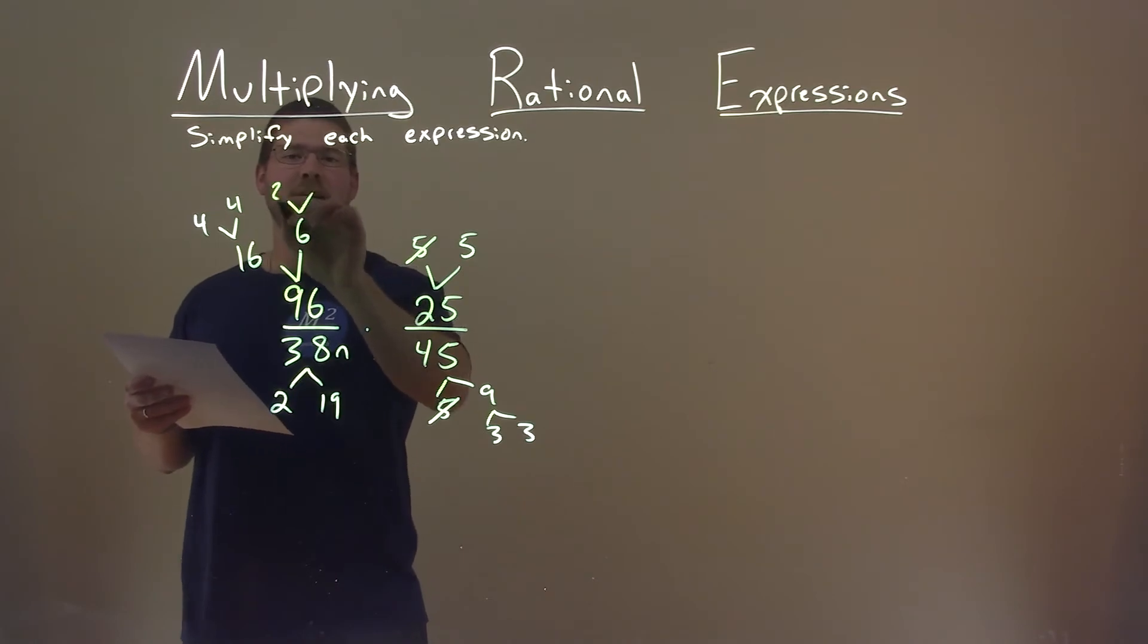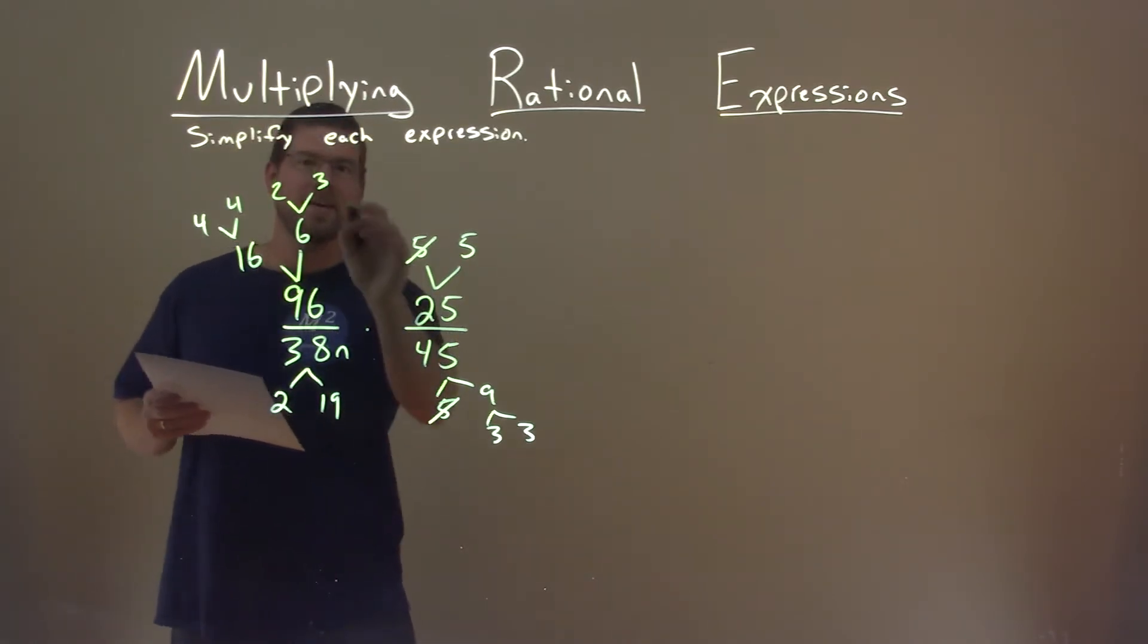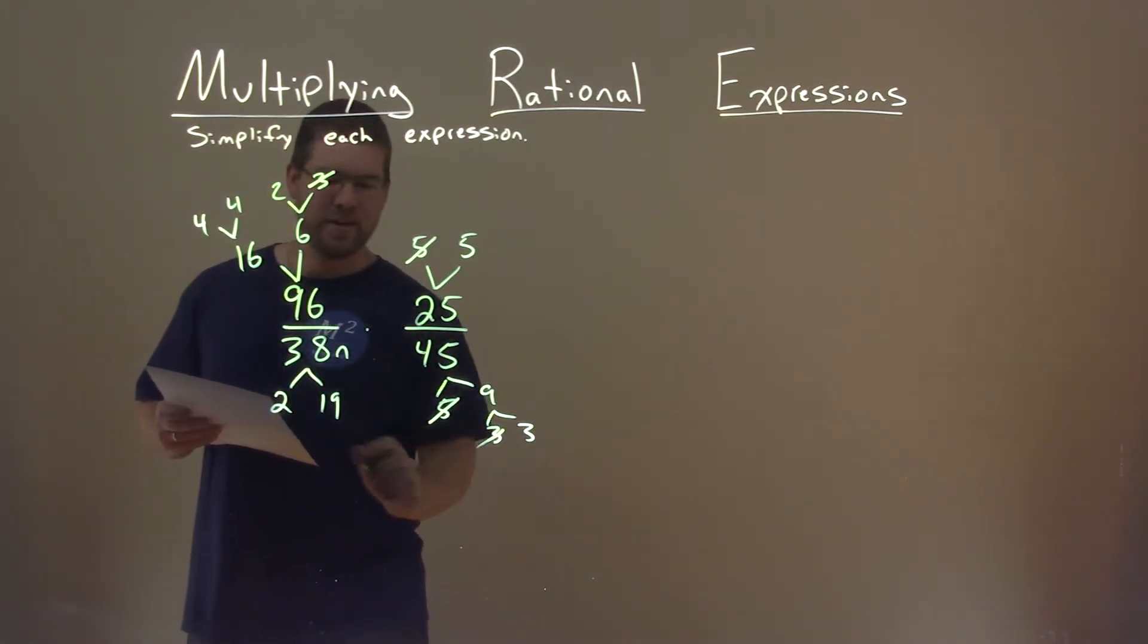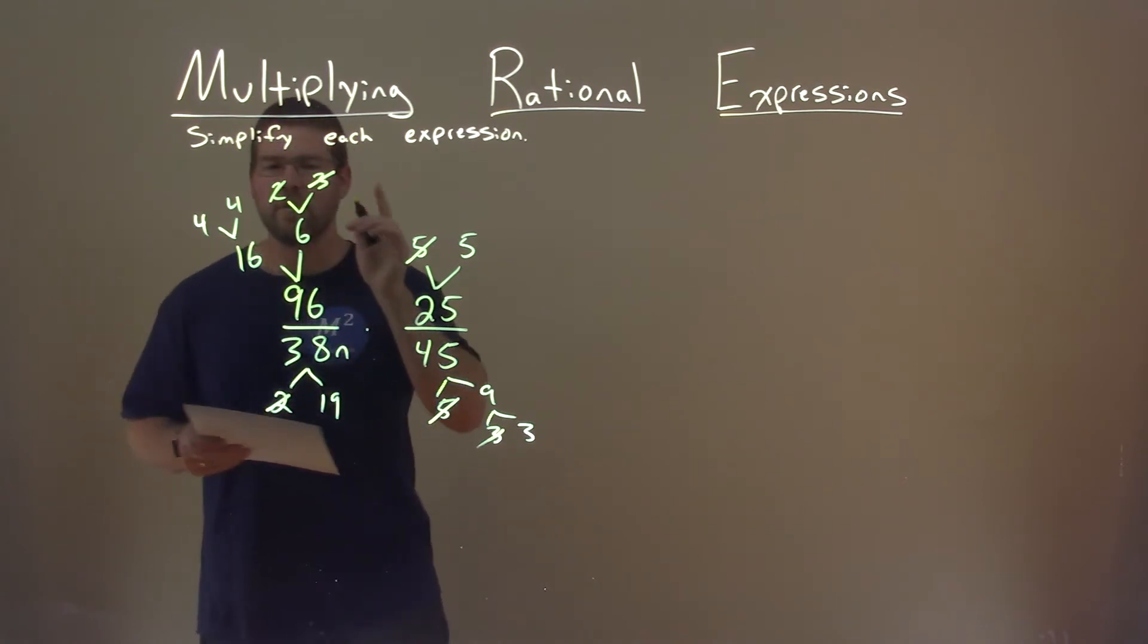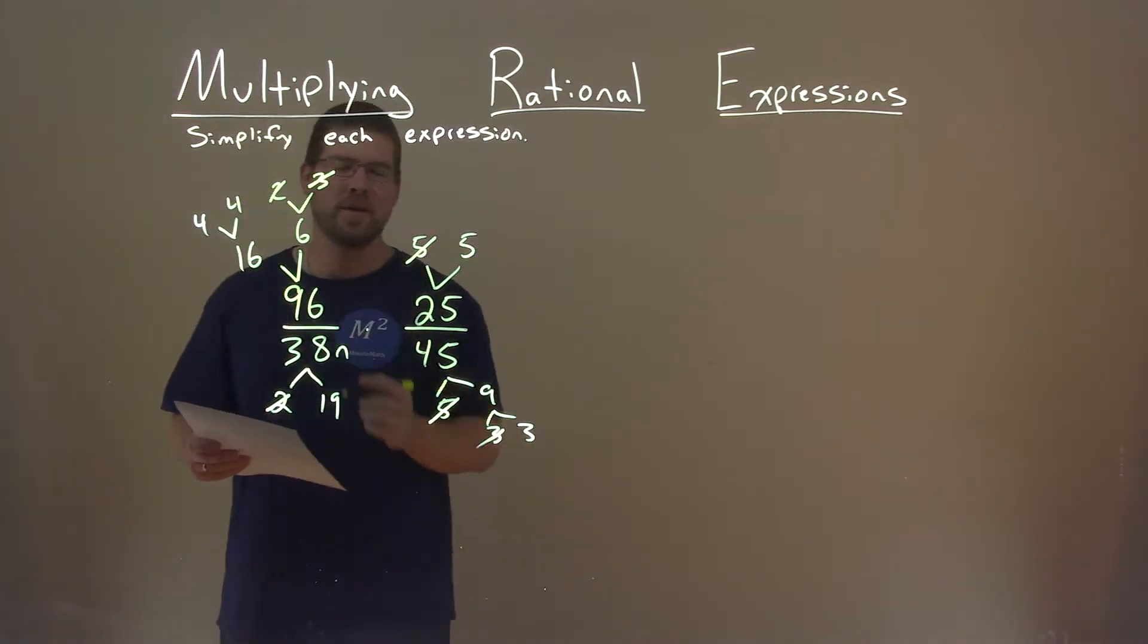I didn't break down 6 all the way, that's why. We have 2 times 3, right? 3's cancel here. 3 here. 2 here. 2 here. If you're going to notice I forgot to break down that 6, let me know.